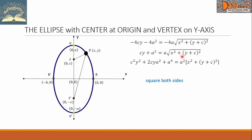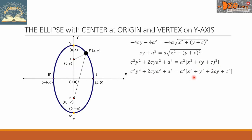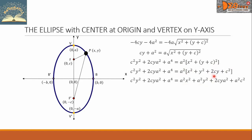...squaring the right side, a becomes a², and squaring the radical cancels it, leaving only the radicand. Let us simplify further by expanding (y + c)²: that gives y² + 2cy + c². Then distributing a² to all terms inside the grouping symbol, we get: a²x² + a²y² + 2cya² + a²c².